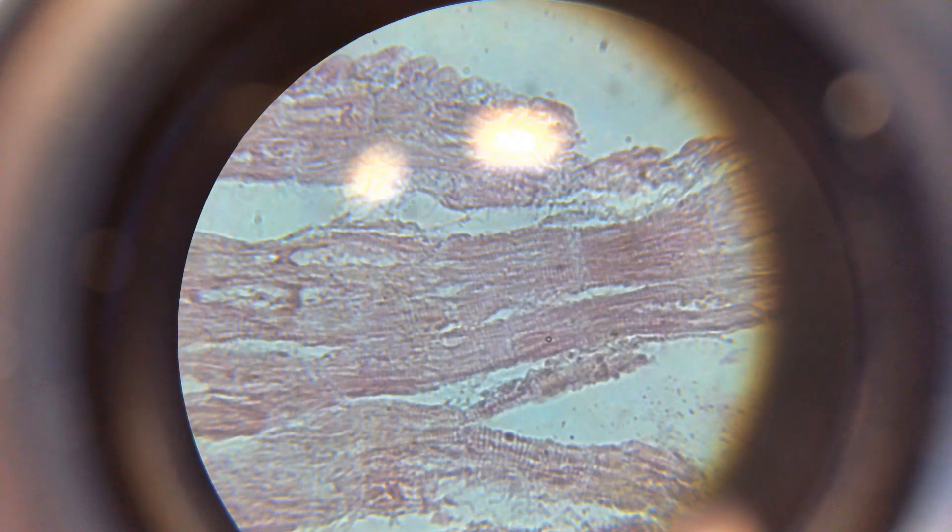You can also see at the ends of each of these cells very thin white bands that are slightly larger than the individual striations. Those bands are called intercalated discs. These intercalated discs contain gap junctions, which allow conductivity. That means that electrical chemical charge can go from one cell to the next.